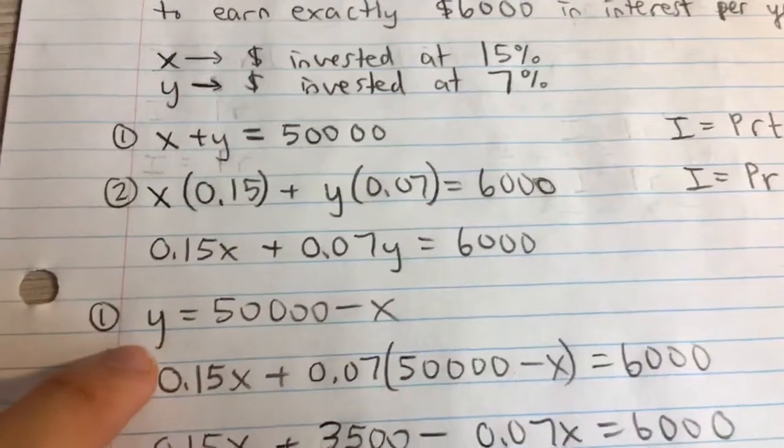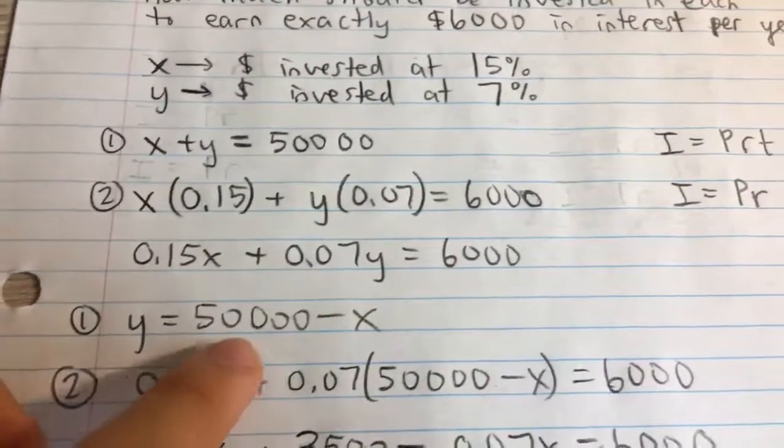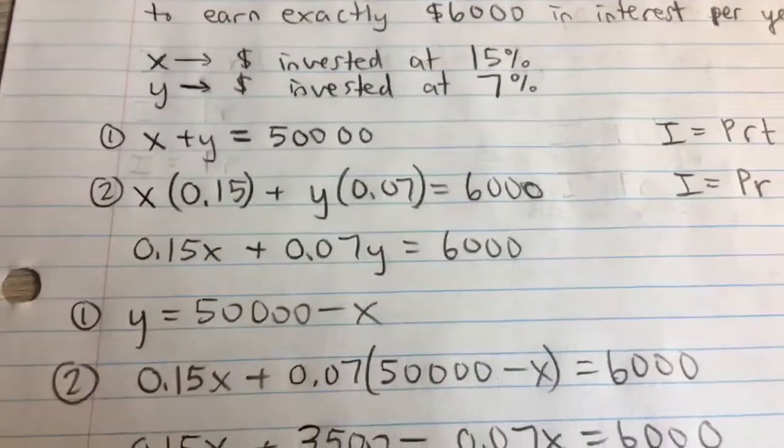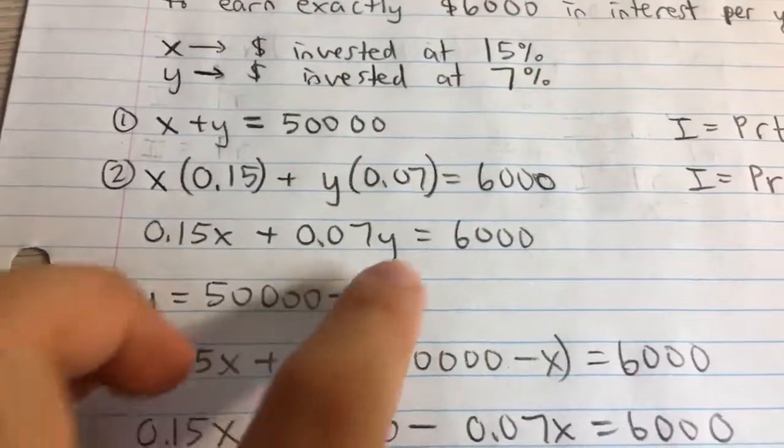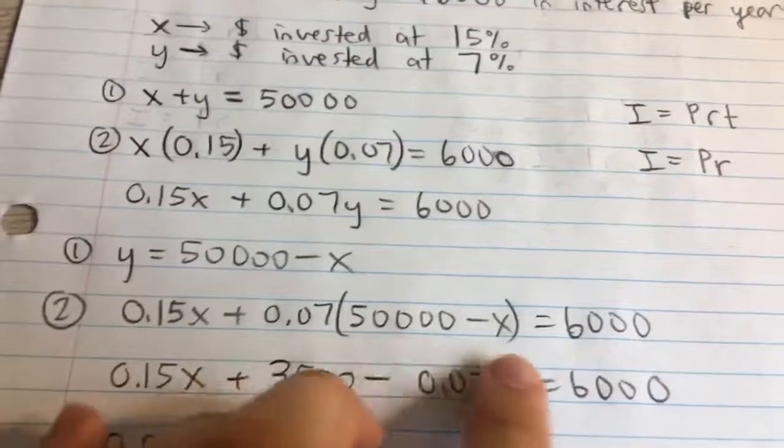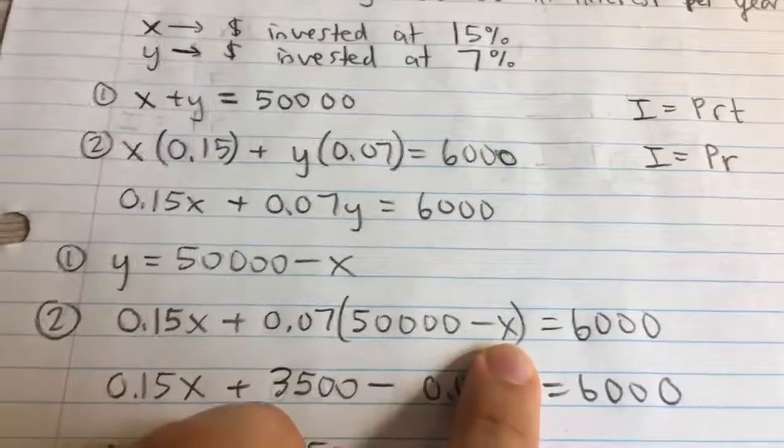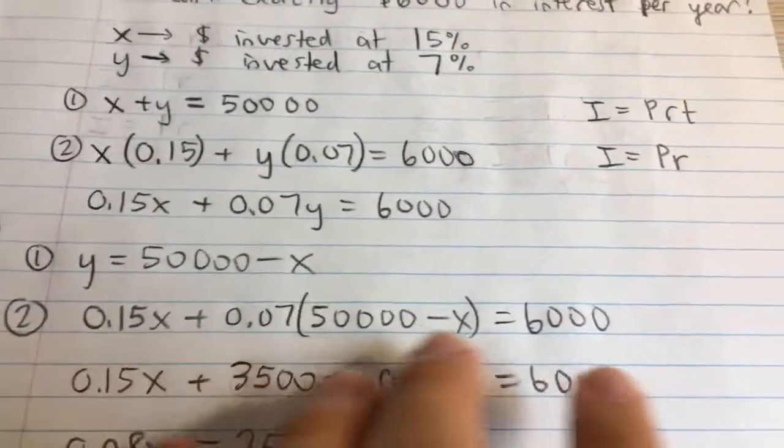I'll solve for Y in the first equation: Y equals 50,000 minus X. I just subtracted X from both sides. Then I'll plug this value for Y into the second equation, giving me 0.15X + 0.07(50,000 - X) = 6,000. Now I have an equation with just X.